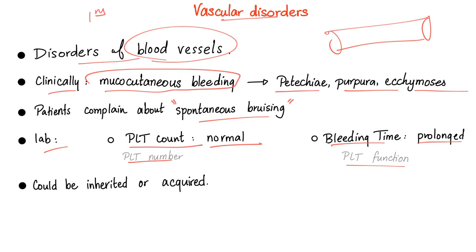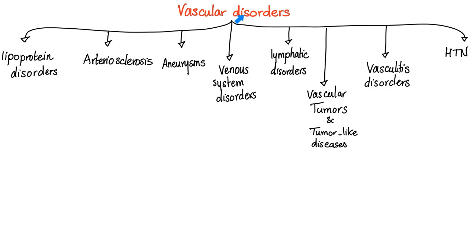Vascular disorders could be inherited or acquired. Examples include scurvy — vitamin C deficiency — Marfan syndrome, and Ehlers-Danlos syndrome. Unfortunately, when people think of Marfan syndrome, they think it's a disease of collagen — that's not true. It's a disease of elastin, and that's a very famous mistake among students and doctors. We also have lipoprotein disorders — familial disorders like familial hypercholesterolemia and abetalipoproteinemia. Then arteriosclerosis, including atherosclerosis, aneurysms, venous system disorders, lymphatic disorders, vascular tumors and tumor-like diseases, vasculitides, and hypertension.